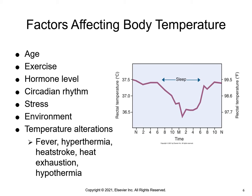Circadian rhythm: body temperature normally changes 1.5 to 1 degree Celsius during a 24-hour period. Stress: both physical and emotional stress will increase body temperature through hormonal and neural stimulation. Environment also influences body temperature. A fever occurs because heat loss mechanisms are unable to keep pace with excessive heat production, causing an abnormal rise in body temperature. For the body, fever is an important defensive mechanism.